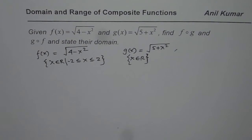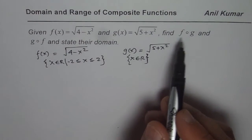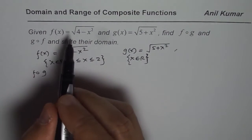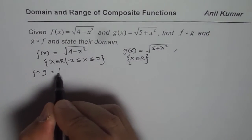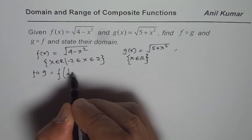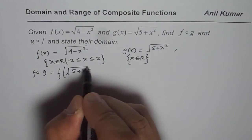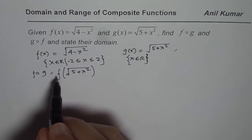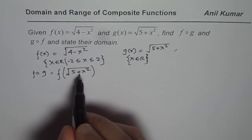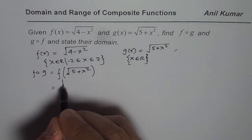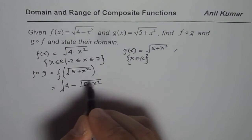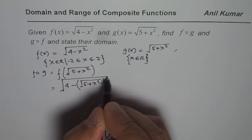I will teach you two methods. The first method is to find the composite function first and then look into the domain. So let's find f of g. f of g means we take g, which is square root of (5 plus x squared), and write f of that — substituting this value into f(x). The x value becomes square root of (5 plus x squared), so we get square root of (4 minus (square root of (5 plus x squared)) squared). That is f of g.